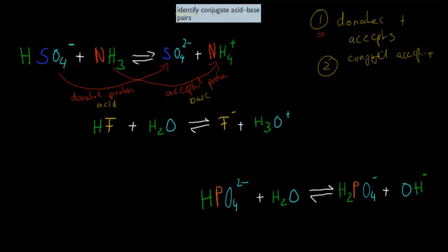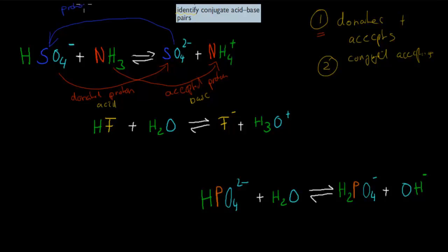That's the first step done. Now we need to figure out the reverse. Since this is a reversible reaction, if we go from the sulfate ion and it were to grab a hydrogen, it would go back to becoming hydrogen sulfate. So it would have grabbed that hydrogen, which means it would be the proton acceptor, and the proton acceptor makes it the base — so it is the conjugate base.